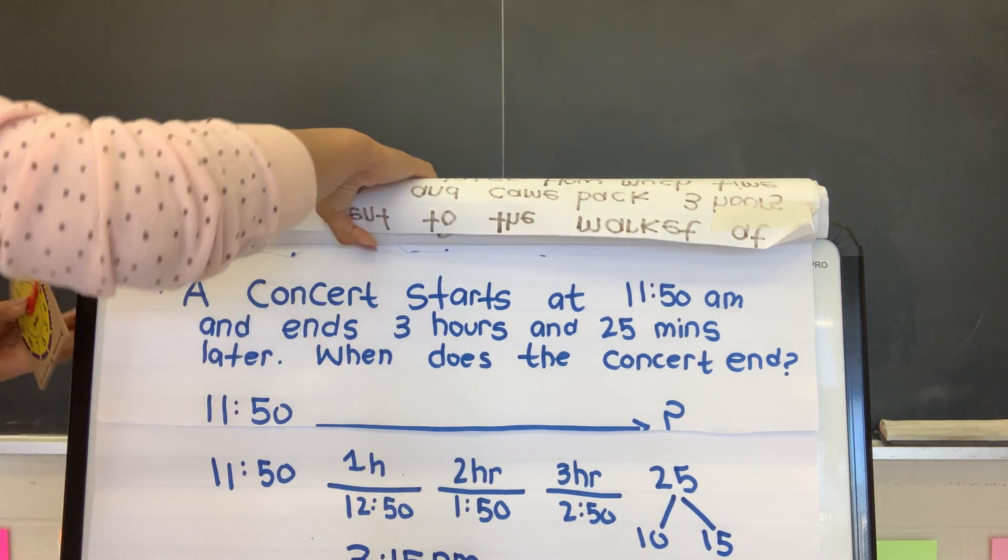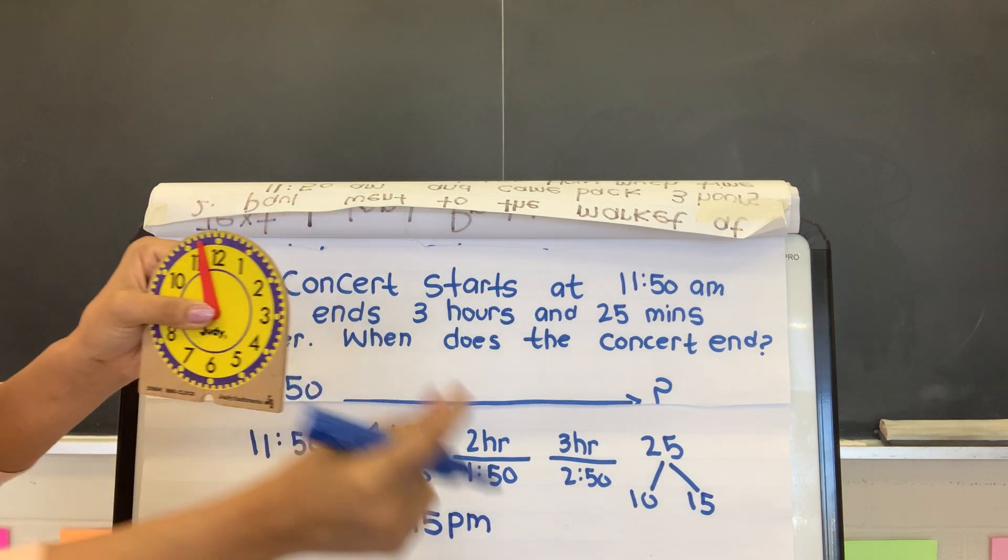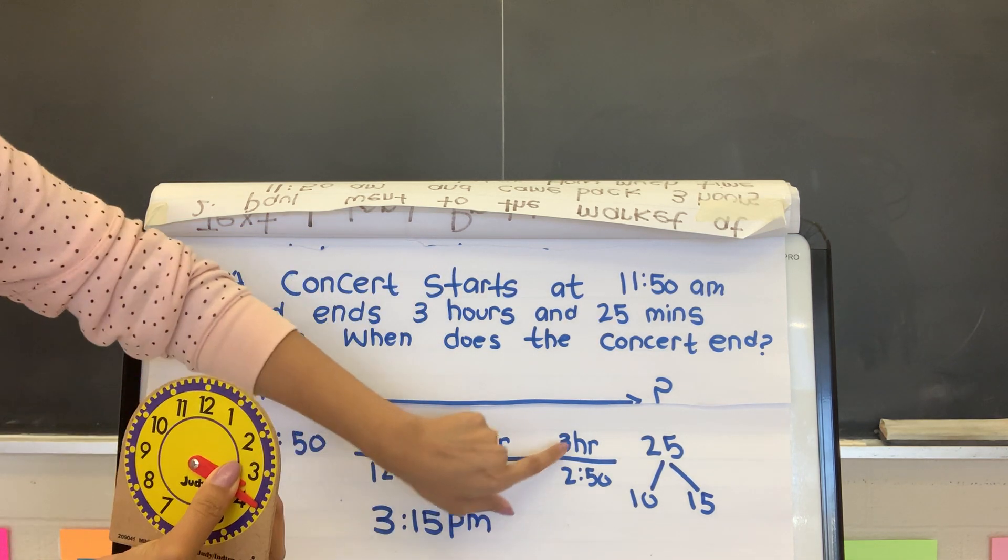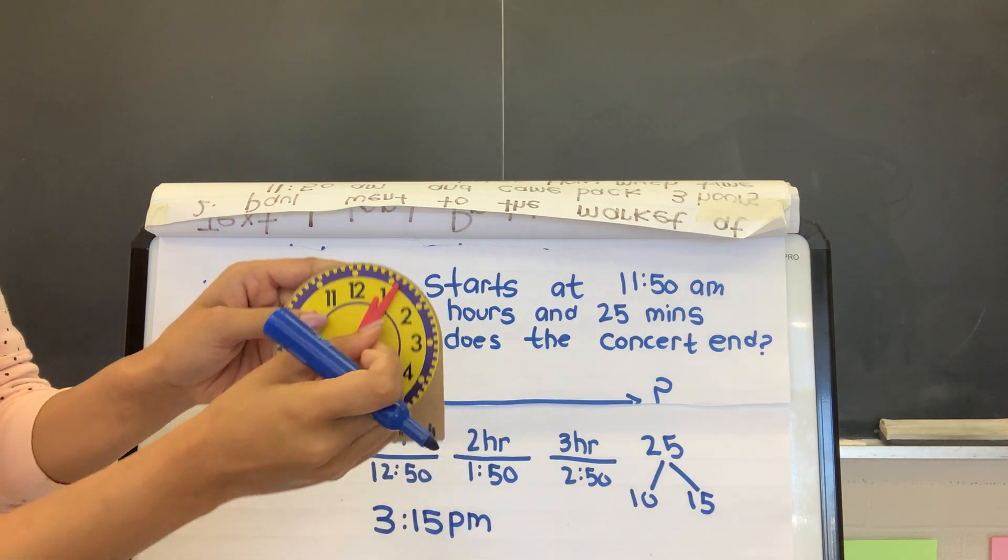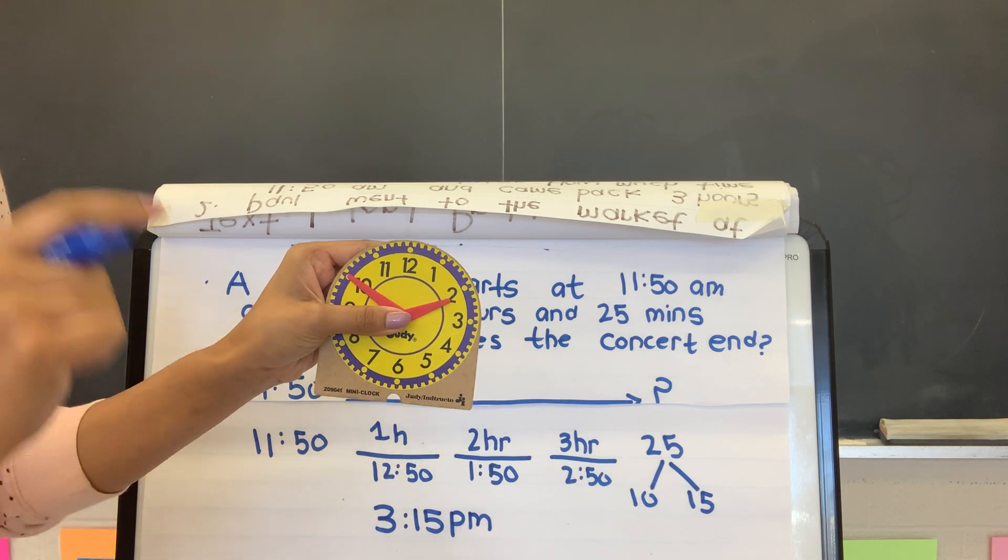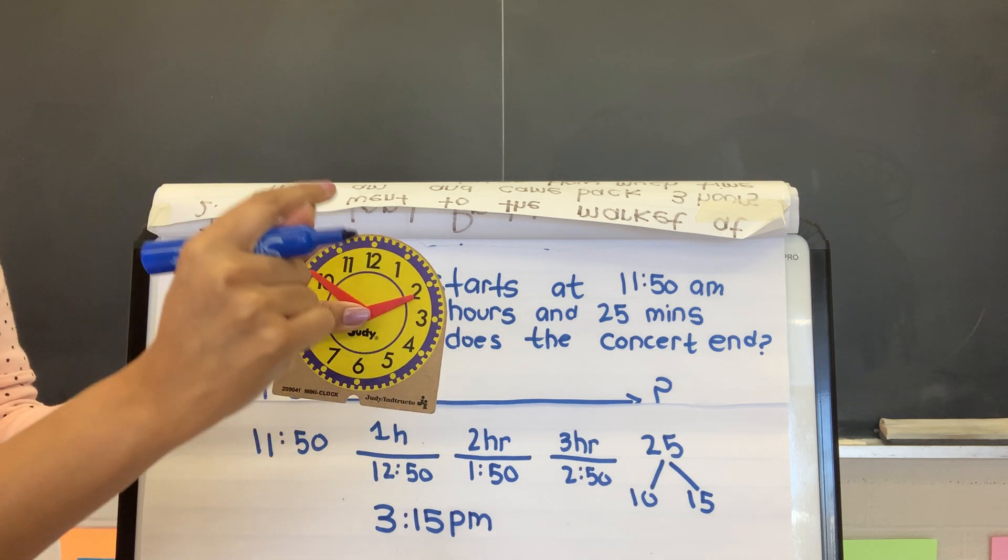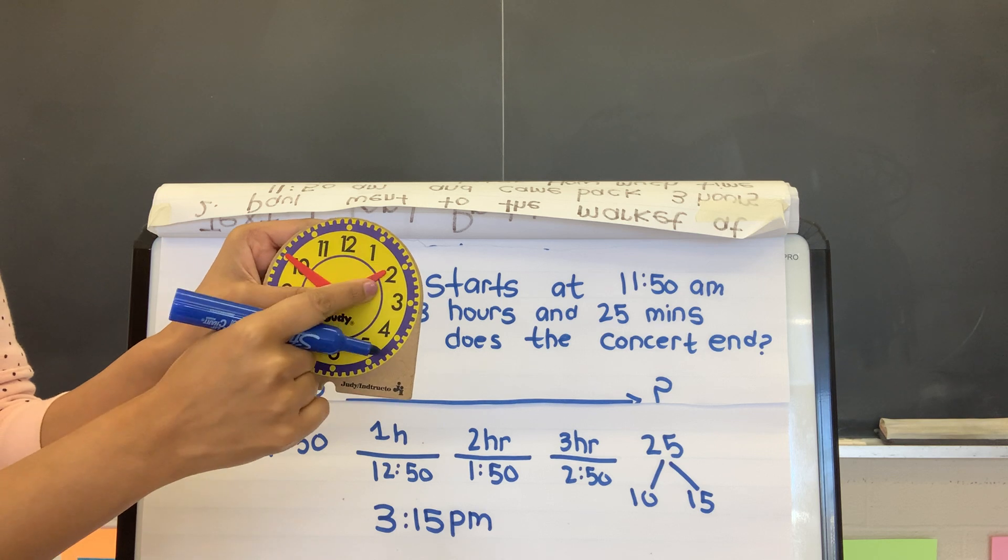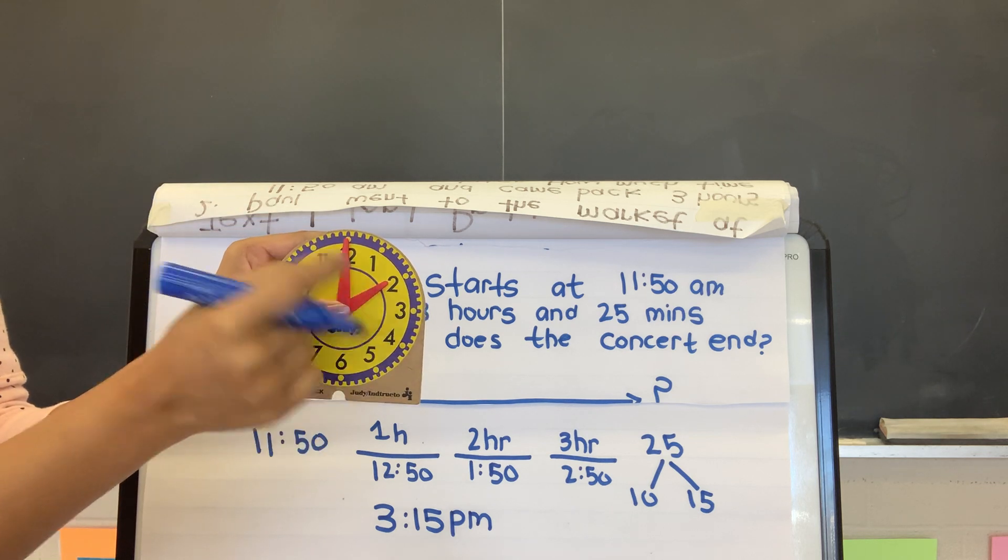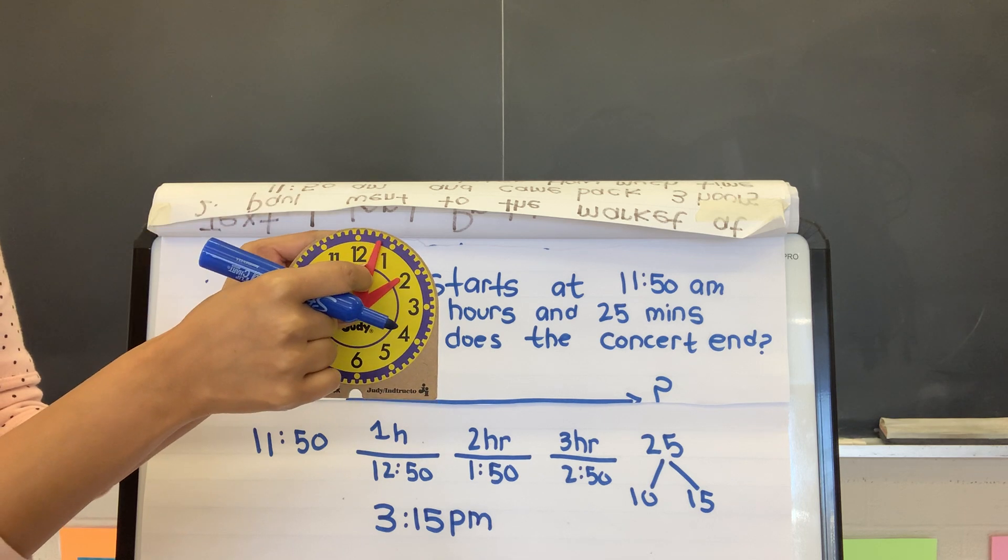Now, if you already know, or if you think you will remember to change your time, to change your hour to 3, what you can do is when you get to 2:50, so we know that I have my hands at 2:50, I can, if I am really good at remembering my time, and I know that once anything goes past, once my minute hand goes at 12, my hour changes. Once it hits 12, my hour is going to change.